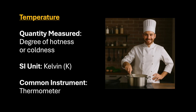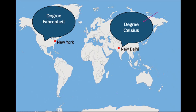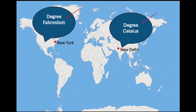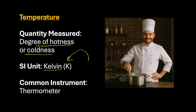Next is temperature. Temperature measures the degree of hotness or coldness. The SI unit is Kelvin and the symbol is capital K. We use degree Celsius here in India, and in the US, degree Fahrenheit is commonly used. But the actual SI unit of temperature is Kelvin. The common instrument we use is a thermometer.